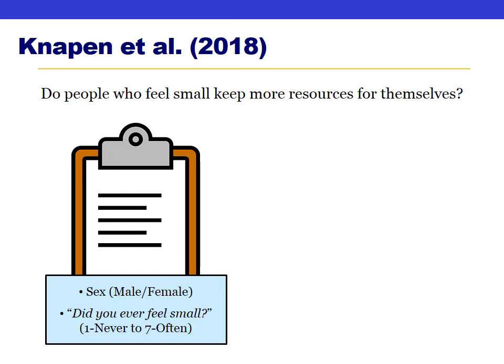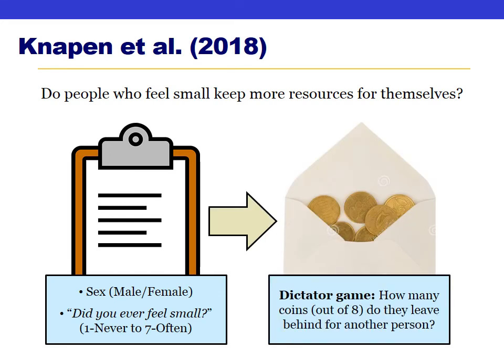Later in the study, participants were given an envelope of coins and an opportunity to keep some for themselves and leave the rest behind for the next participant. The dependent variable is how many coins they left behind — a larger number means they kept fewer coins for themselves. The hypothesis, according to the Napoleon complex, is that people who feel small more often would leave fewer coins for others, so we'd expect a negative relationship between those two variables.